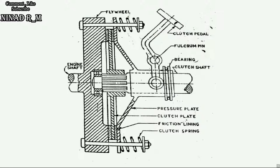So here is the engine shaft. Power from the engine shaft goes to the flywheel. Here is the flywheel. The flywheel is continuously rotating. These are the bearings which are used for free rotation of the clutch shaft inside the flywheel.